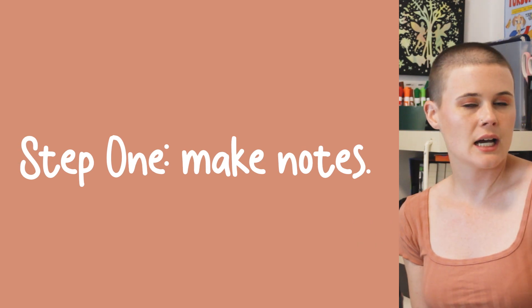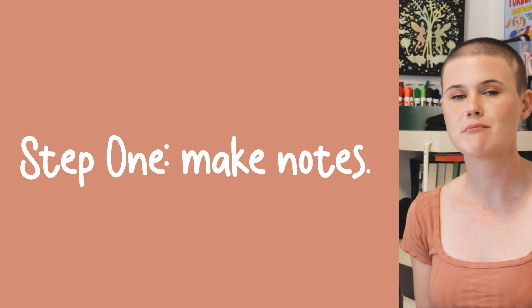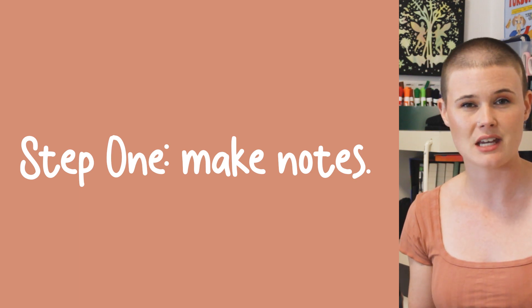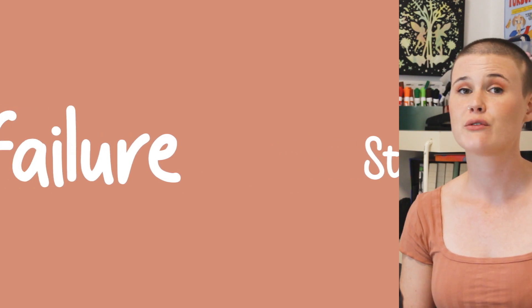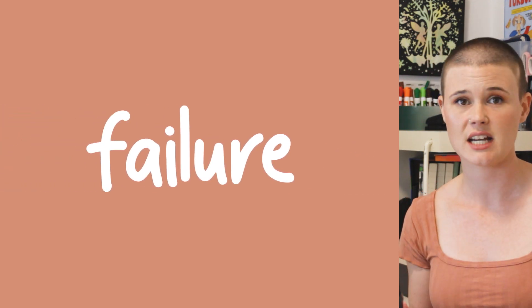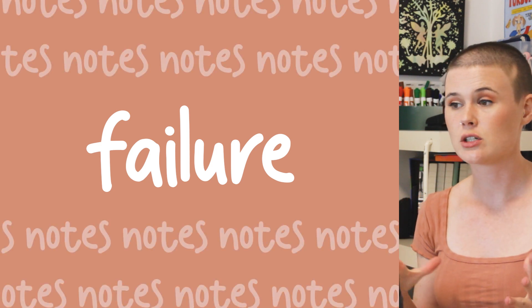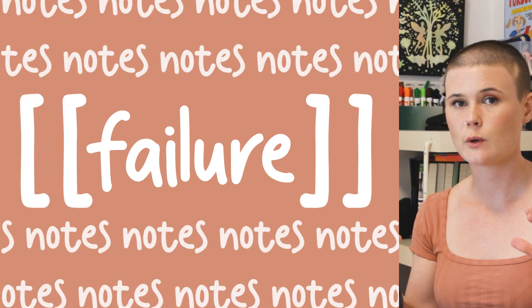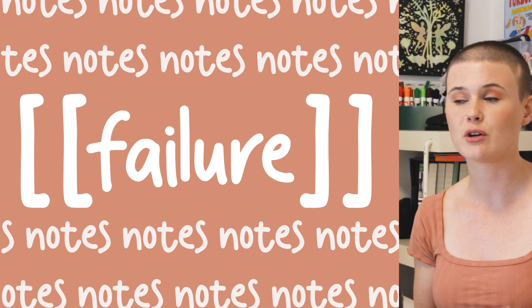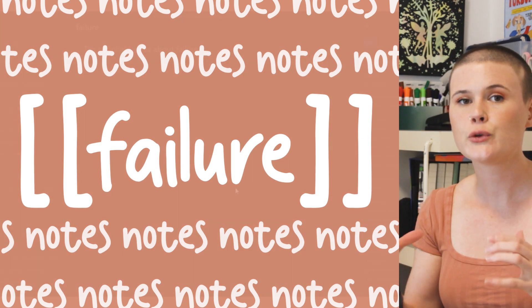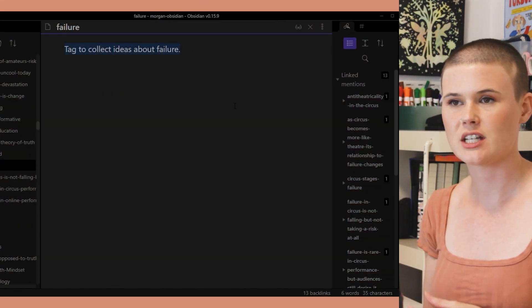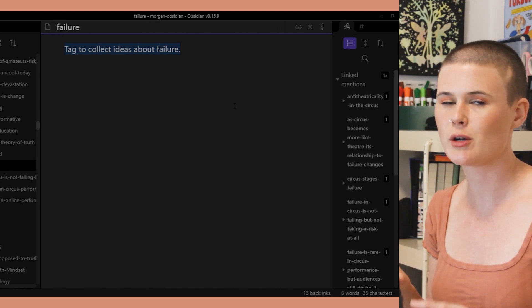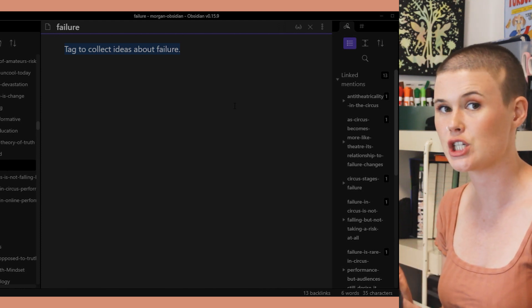So that means step one: we're going to need to make some notes. When I notice a theme starting to emerge in my thinking — and this could be absolutely anything — I make a note for it. For example, I noticed I was talking about failure a lot in many contexts. So every time the word failure appeared in my notes, I would put double square brackets around it, and eventually there were enough notes about failure that I turned failure into a note itself.